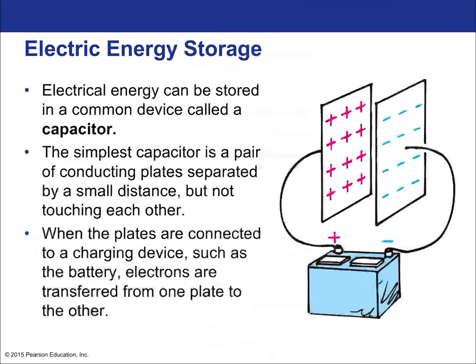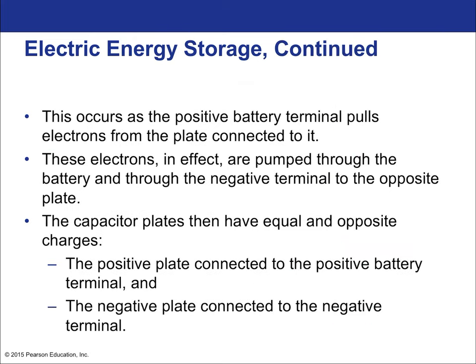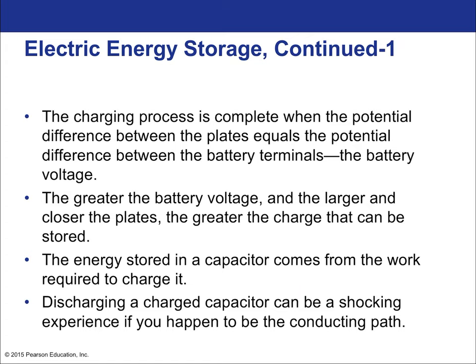Electrical energy can be stored in a device called a capacitor—a temporary storage system for electrical energy. The simplest capacitor is just a pair of conducting plates separated by a small distance; the air (or a better insulator) between them provides insulation. When connected to a battery, electrons are transferred from one plate to another, creating opposite charges on each plate. The charging process is complete when the potential difference between the plates equals the potential difference of the battery.